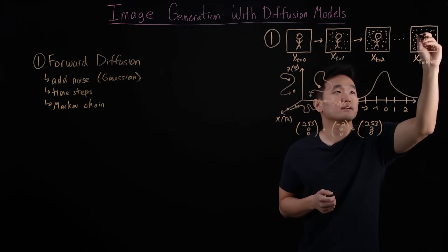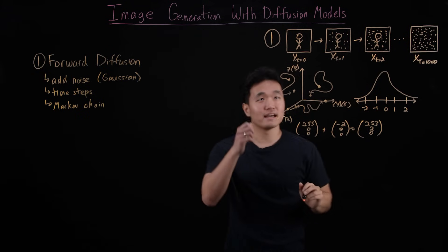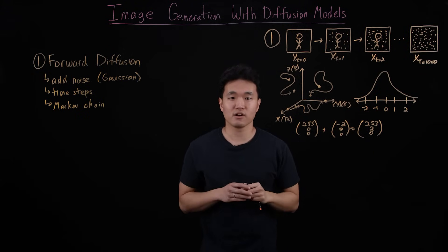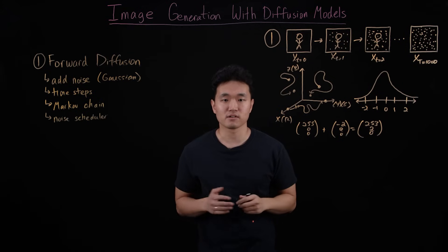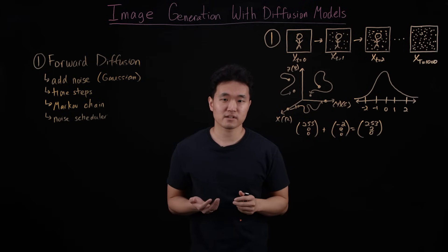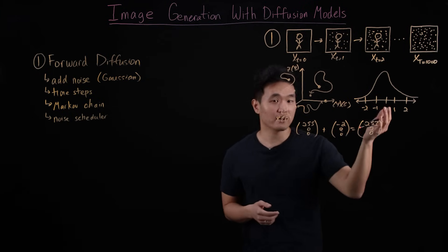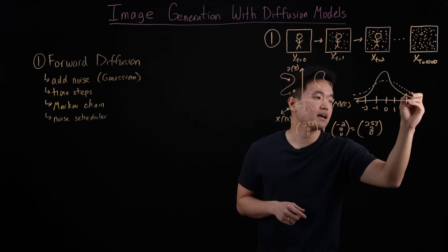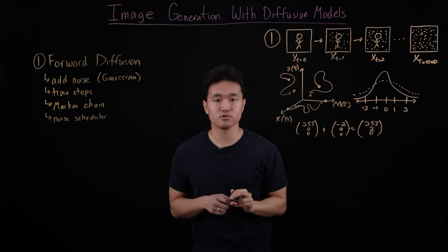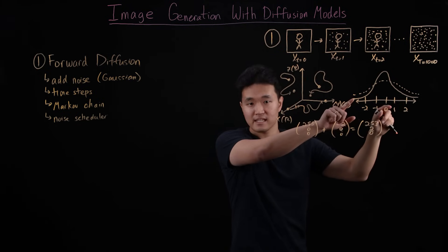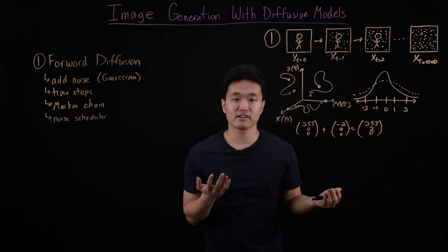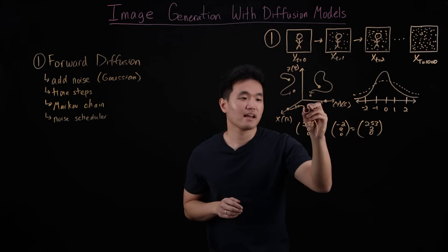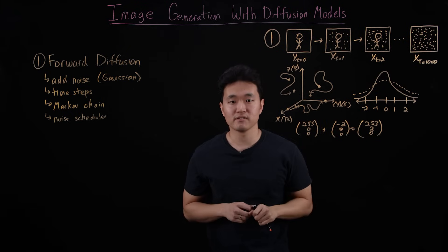So how quickly we go from a clear picture to an image of random noise is largely dictated by what's called the noise scheduler or the variance scheduler. This scheduling parameter controls the variance of our Gaussian distribution, where a higher variance corresponds to larger probabilities of selecting a noise value that is higher in magnitude, thus resulting in more drastic jumps and changes for each color of each pixel.